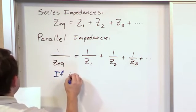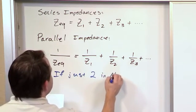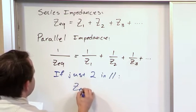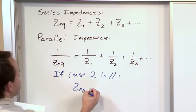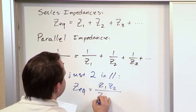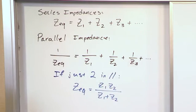If just two impedances in parallel, then this whole thing reduces to something a little easier. We've done this for resistors. It's product over sum. So it would be Z1 times Z2 over Z1 plus Z2. And this is again exactly like resistors.